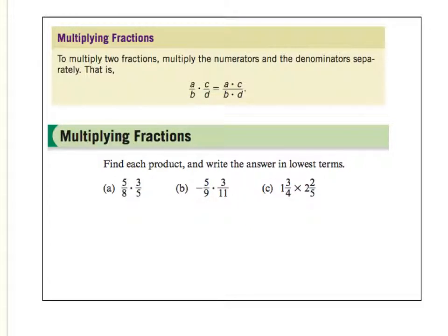To multiply fractions, to multiply two fractions, very easy. Upstairs times upstairs, downstairs times downstairs. Let's look at this example here. Like I said, upstairs times upstairs, downstairs times downstairs. That's it.